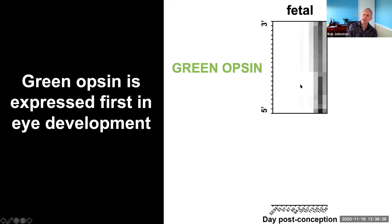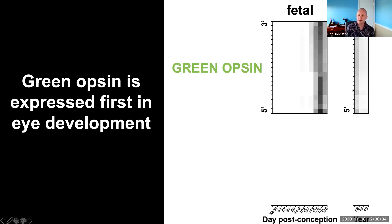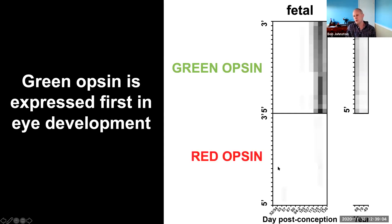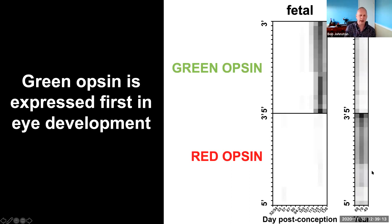Looking at the green opsin with this heat map, over post-conception time we start to see the green opsin being expressed, and in adults we see that the green opsin is expressed — a little variable between individuals but expressed in all adults. We then asked: what's going on with the red opsin? We had two predictions: if stochastic, it should show a similar pattern; if temporal, either the red opsin comes on earlier or later than the green. What we saw was essentially no red opsin with only a trickle at the end of the fetal time period, then in adults the red opsin is blazing. This supported the idea that green cones are made first, followed by red cones.